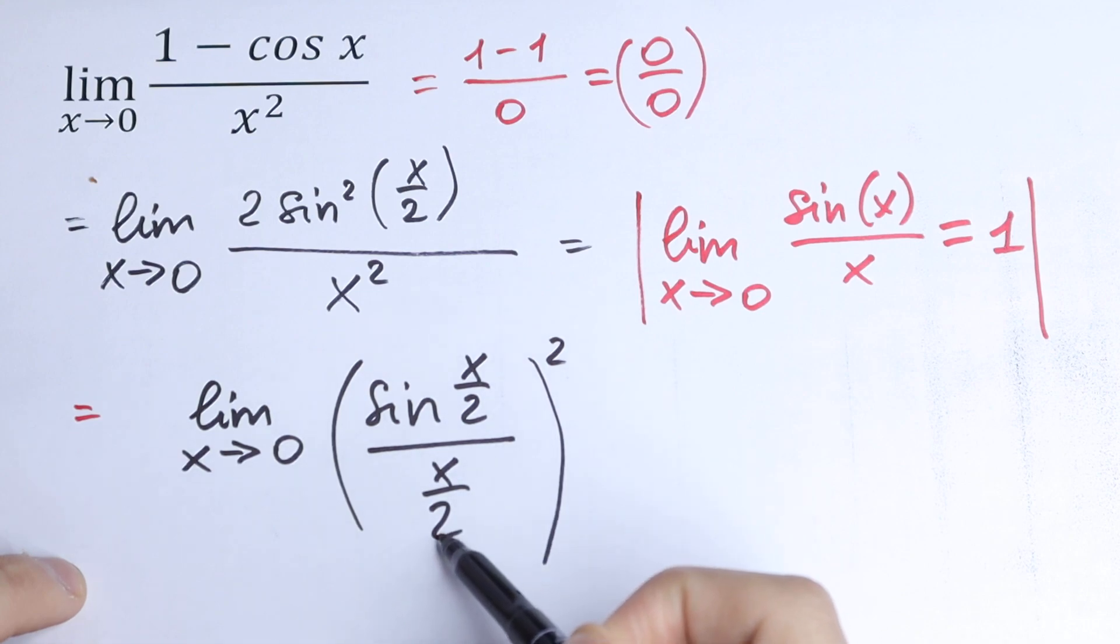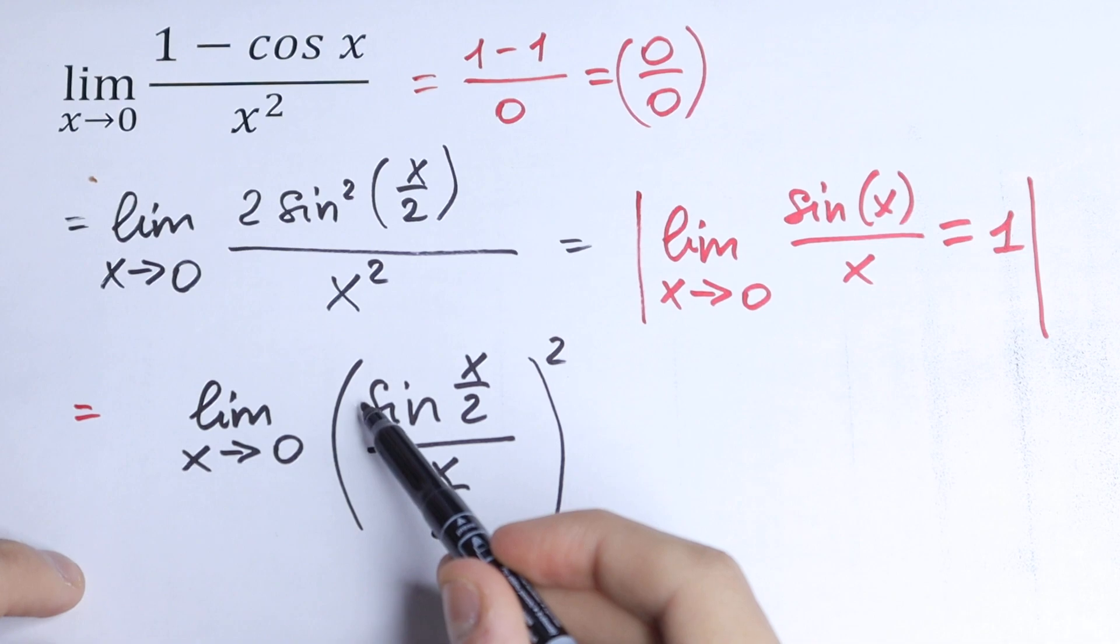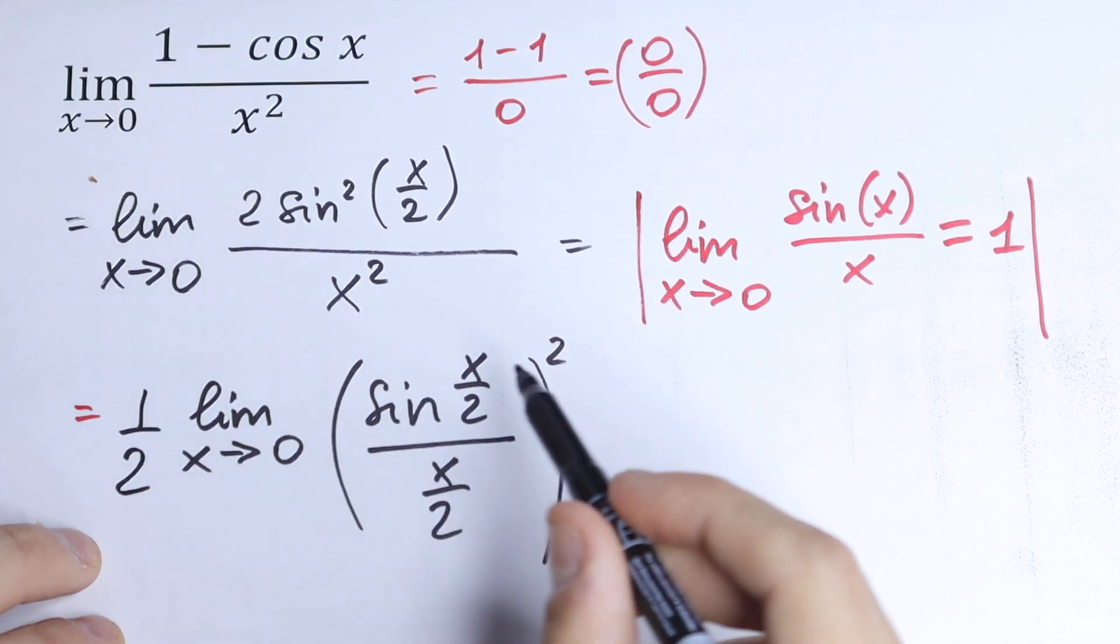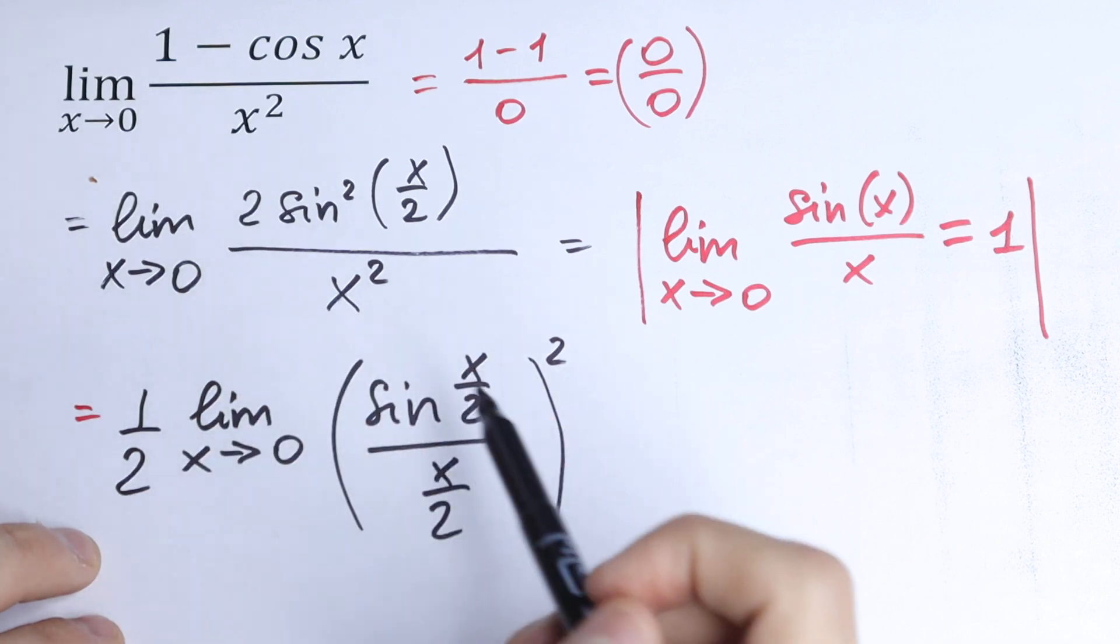If we raise this to the second power, we will have 4 in the denominator. So we need to write 1/2 before the limit. Nothing changed—this is the same as right here.